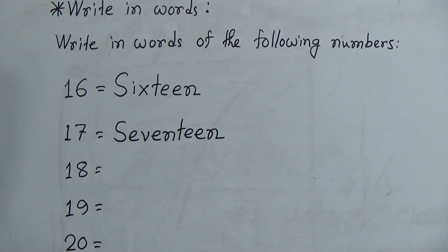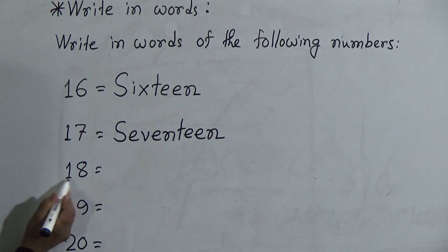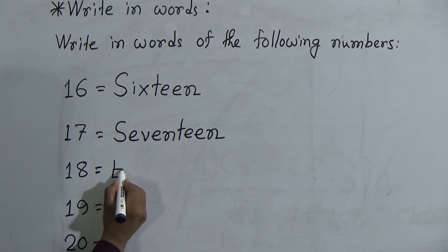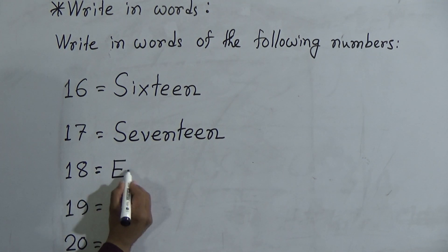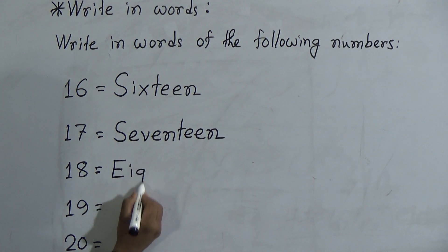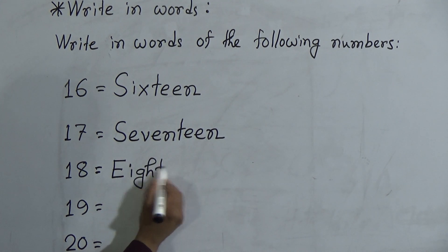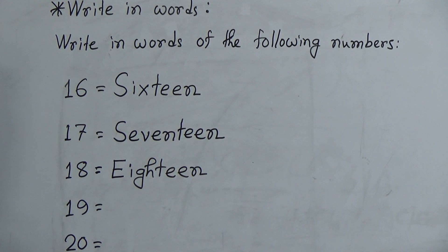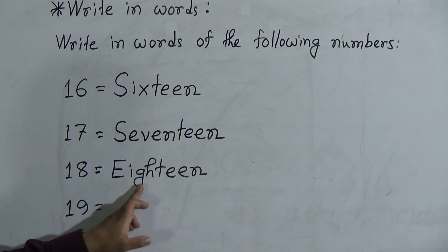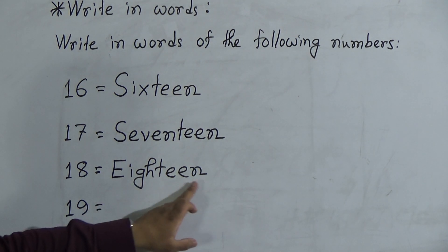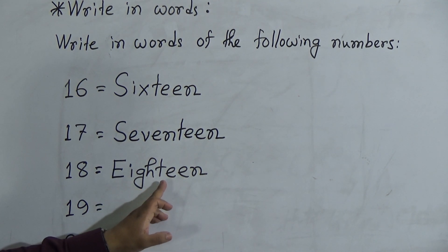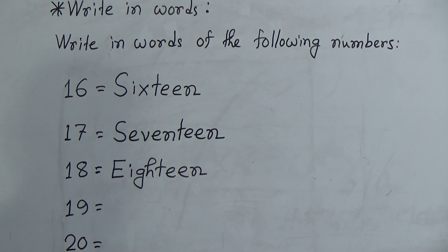The next number is 1 and 8, which makes the number 18. The spelling of 18 is E-I-G-H-T-E-E-N, 18. Or you can say E-I-G-H-T-E-E-N, 18.